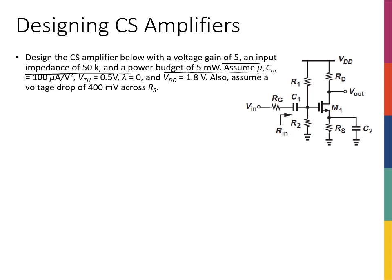Let's not have that much freedom — let's start with a simpler design, because too much freedom makes things more complicated. We're going to use a common source amplifier. It's the last circuit analyzed in the previous slide — a common source amplifier with a bypass capacitor at the source, so in AC analysis it behaves as a normal common source amplifier with a biasing circuit and an RG.